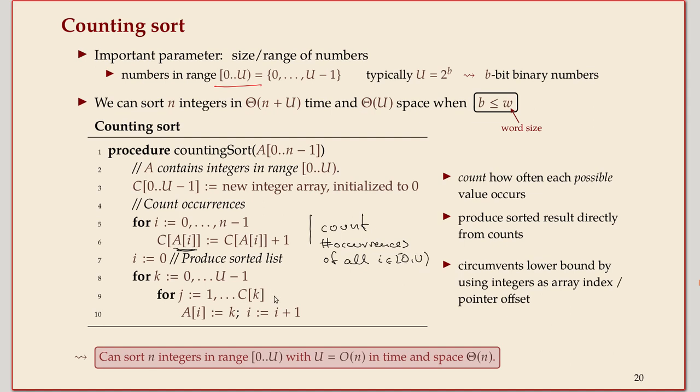And once we have the counts, we can just write out the sorted list by producing an appropriate number of copies of each number. That's it. Simple algorithm. Do you have questions about the algorithm?